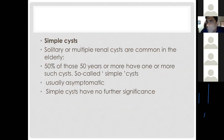Simple cysts are very common; ultrasound of a general population frequently reveals incidental simple cysts. They are usually one or two in number, which differentiates them from genetic diseases like autosomal dominant polycystic kidney disease, where cysts are large and much greater in number. Simple cysts are benign, have no significant clinical course, and usually occur in the adult population.